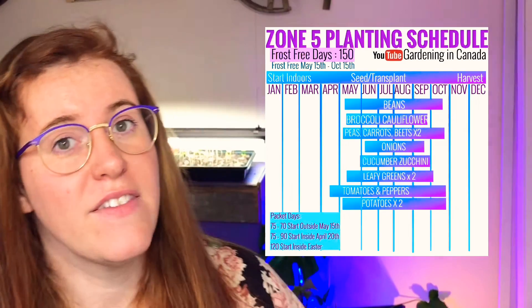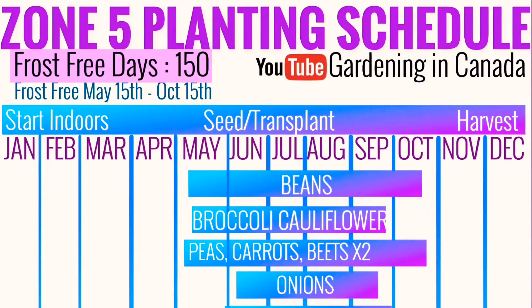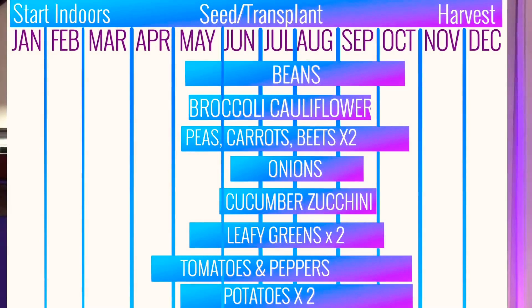Zone five, your growing schedule looks like this. For your zone, you have a lot longer growing season compared to zone three. On yours, you have your total number of growing days, your frost-free days, and also when to harvest, when to seed, and when to transplant. If you have cold frames or some form of coverage, you're also able to start your crops outdoors even earlier.